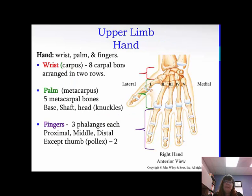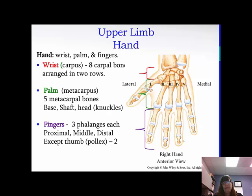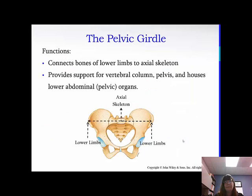The hand is the wrist, the palm, and the fingers. The wrist is made up of the carpals — you have eight carpal bones arranged in two rows. The palm is the metacarpus — five metacarpal bones labeled one through five. Each one has a base, a shaft, and a head, which are your knuckles. And then the fingers: you have three phalanges except for the thumb, so you have a proximal, middle, and distal on all of the phalanges except for the thumb. Labeled one through five from lateral to medial. Make sure you go over those carpal bones as well.